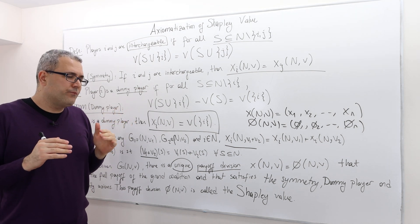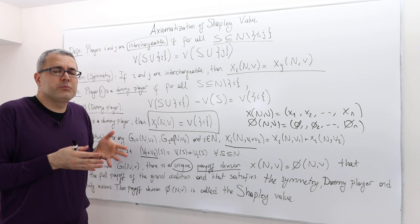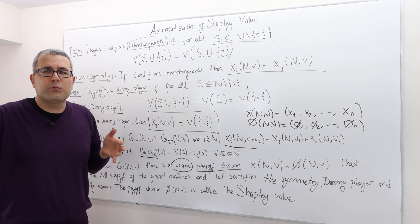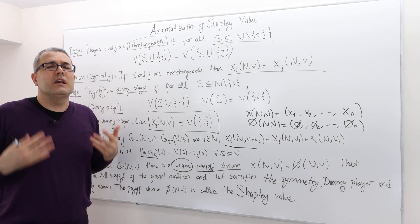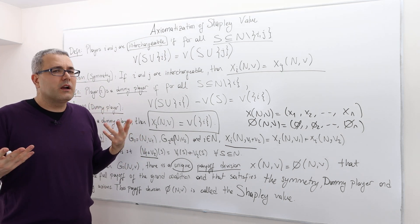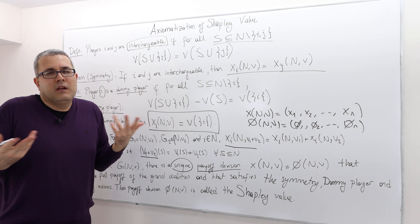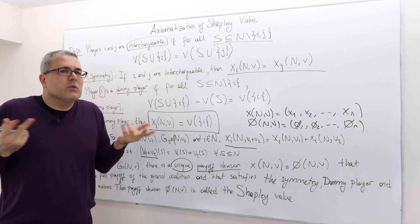So whether you include player i to your coalition or player j to your coalition, it doesn't matter. The marginal contribution is going to be the same. So it's kind of these two guys are kind of equal.